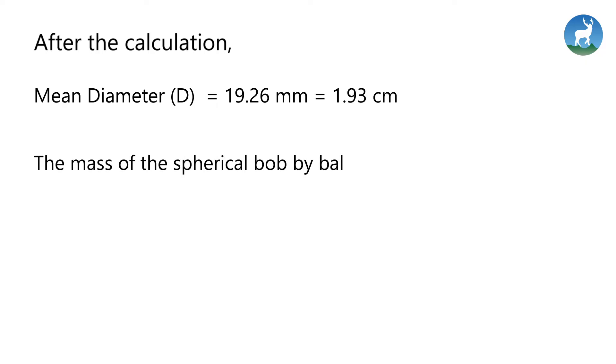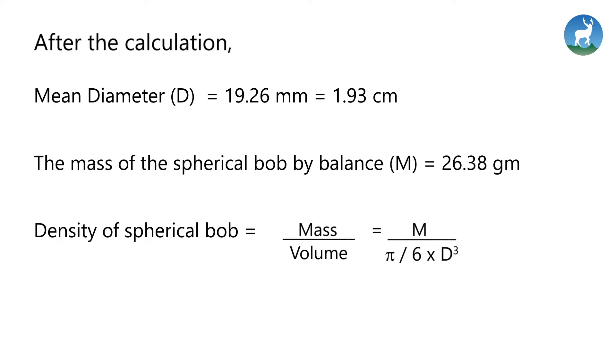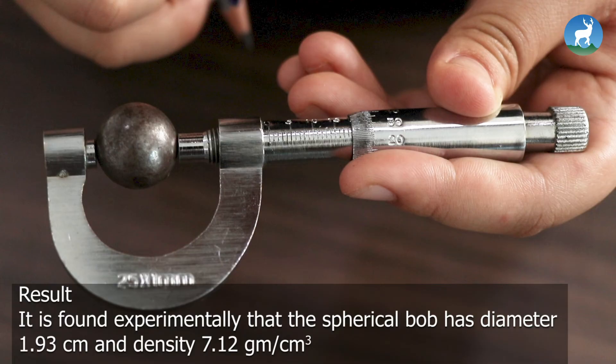The mass of spherical bob by balance is 26.38 gram. The density of spherical bob is mass by volume which is 7.12 gram per centimeter cube. It is found experimentally that the spherical bob has diameter 1.93 centimeter and density 7.12 gram per centimeter cube.